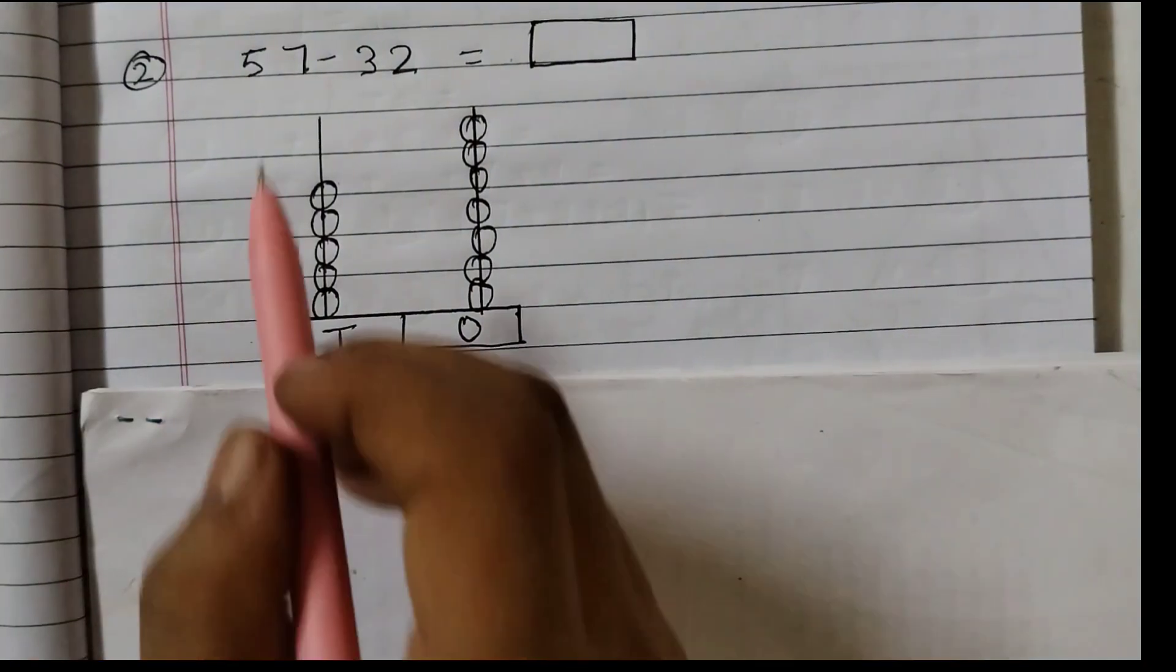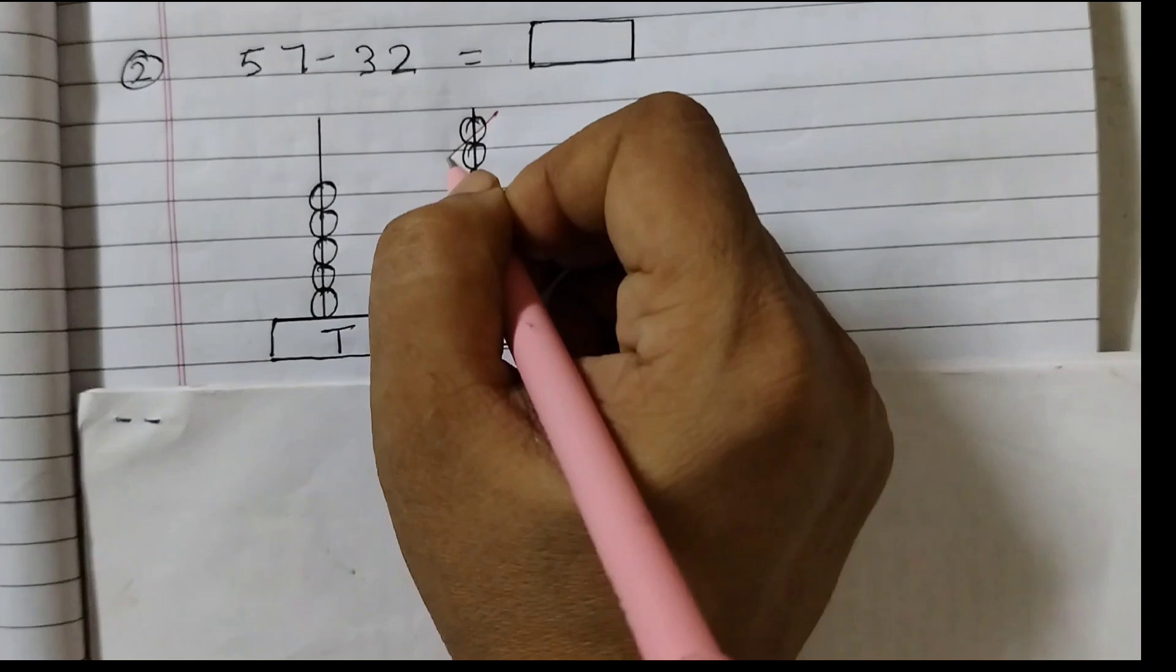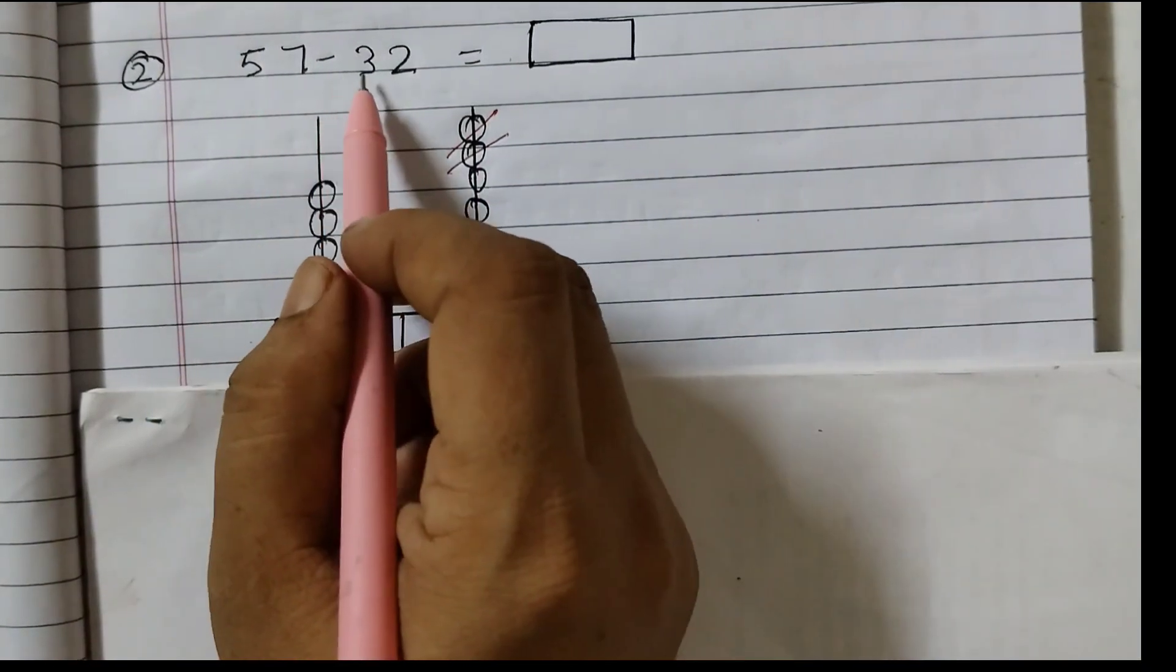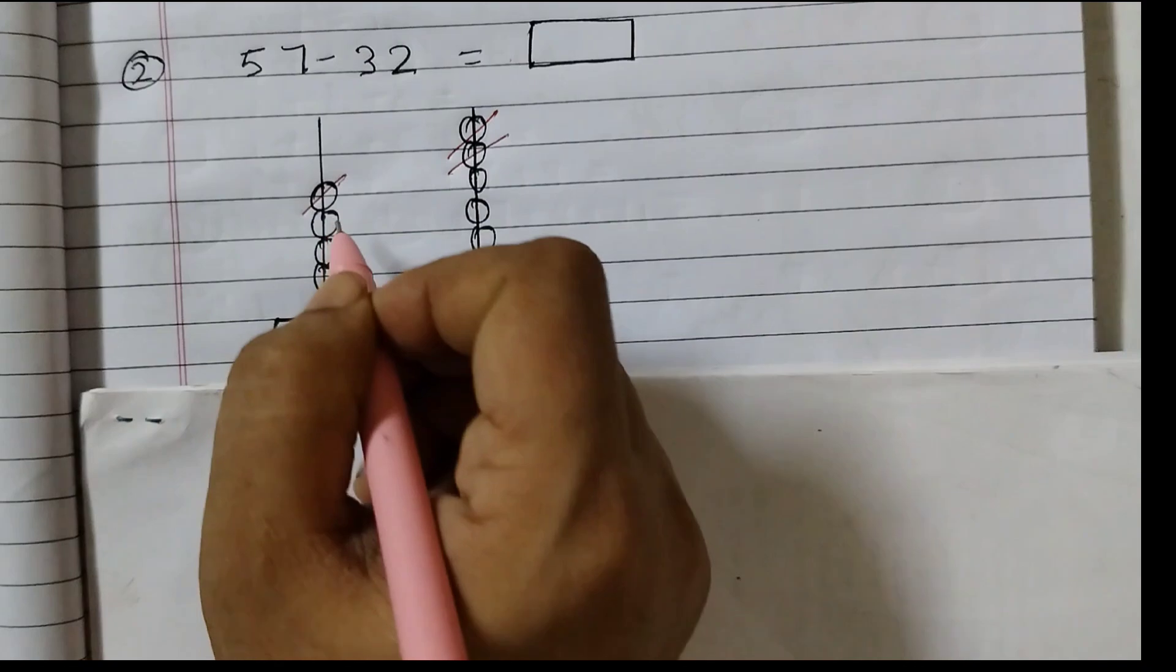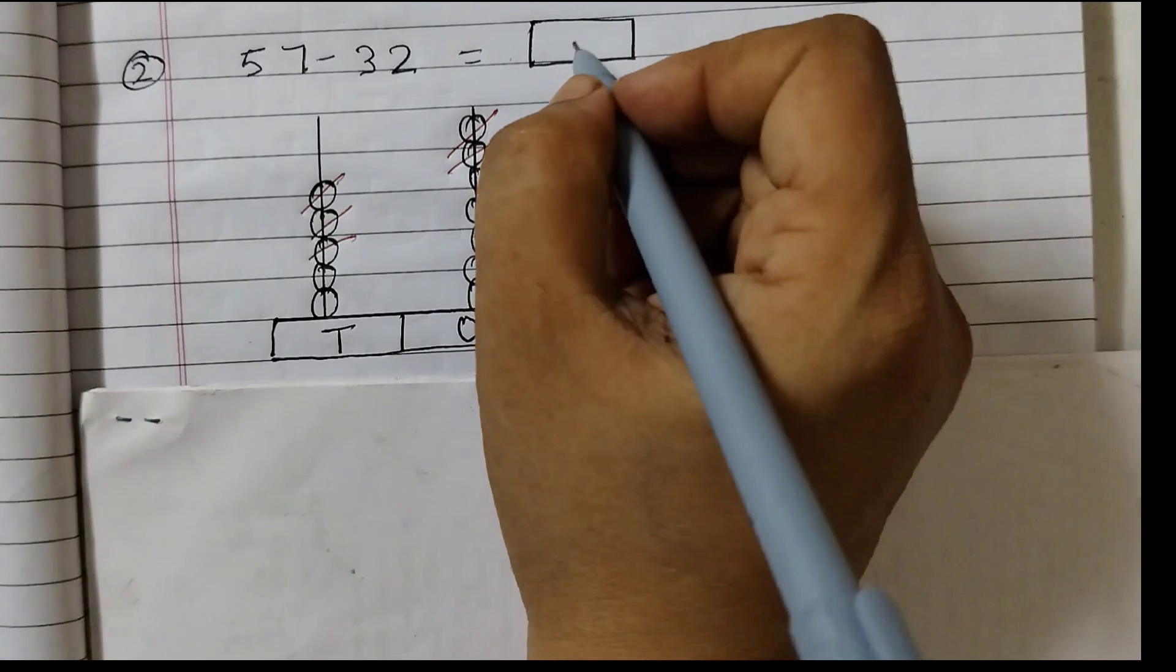Now we will do the cancellation. 7 ones minus 2 ones. So from here you cancel 2. And here 5 tens minus 3 tens. So cancel 3. Now let us write the answer. 10's place we have 1, 2. 2 beads.